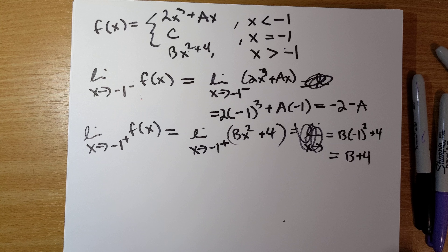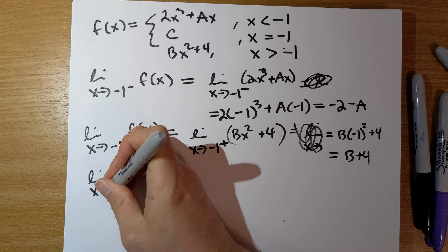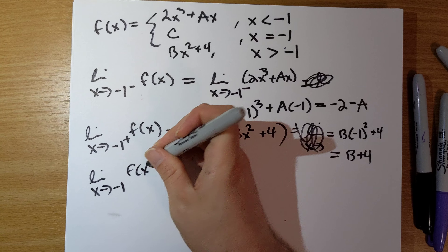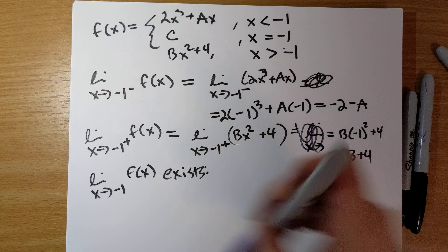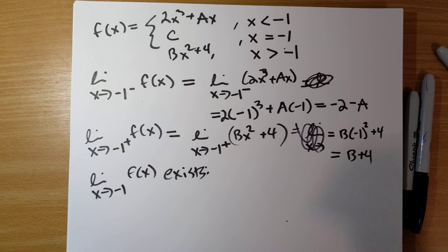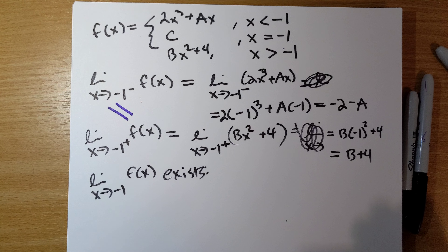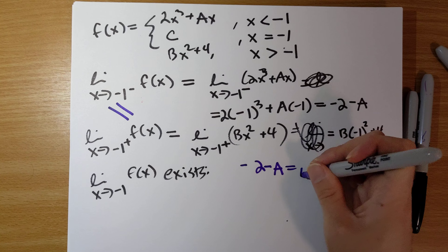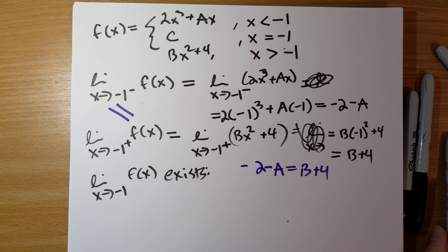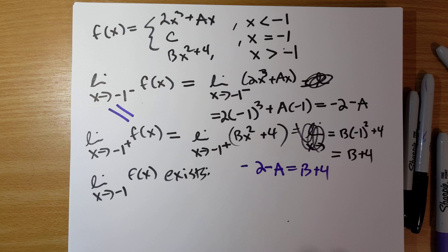Part c says: how must a and b be related if the limit as x goes to negative 1 of f of x exists? For this limit to exist, the two one-sided limits must equal each other. So negative 2 minus a must equal b plus 4. That is how those are related.